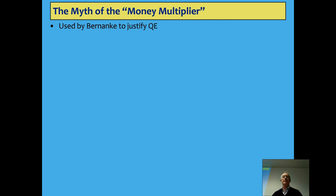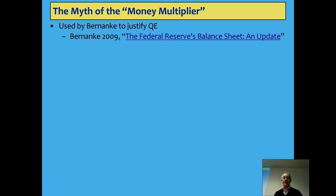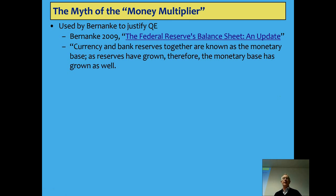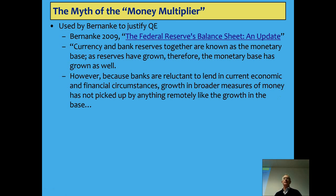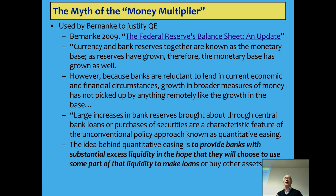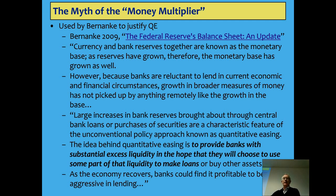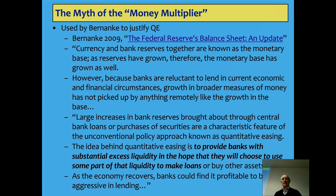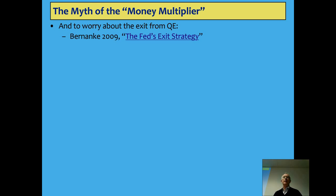Bernanke, justifying QE back in 2009, says: currency and reserves together make the monetary base. As reserves grow, the monetary base grows as well. Because banks are reluctant to lend, growth in the broad measures hasn't led to growth in the base — they've been driven by growth in the base. Large increases of bank reserves are a feature of quantitative easing, and the idea behind easing is to provide banks with substantial excess liquidity in the hope that they will choose to use some part of that liquidity to make loans — they can use the reserves to lend.